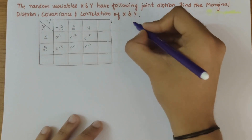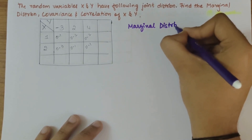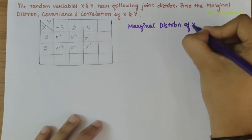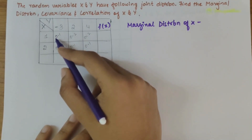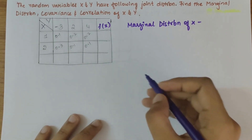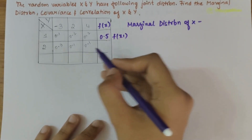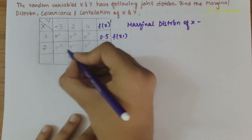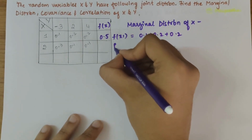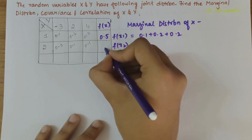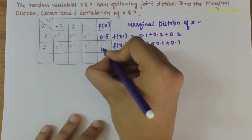Finding the marginal distribution, we know that the marginal distribution of x can be written as f of x. So f of x1 is 0.1 plus 0.2 plus 0.2, that is 0.5. And f of x2 is 0.3 plus 0.1 plus 0.1, that is again 0.5.